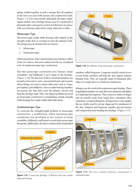In some aircraft, principally the light single-engine models, truss fuselage frames may be constructed of aluminum alloy and may be riveted or bolted into one piece, with cross-bracing achieved by using solid rods or tubes. The monocoque (single-shell) fuselage relies largely on the strength of the skin or covering to carry the primary loads. The design may be divided into two classes: monocoque and semi-monocoque. Different portions of the same fuselage may belong to either of the two classes, but most modern aircraft are considered to be of semi-monocoque type construction.